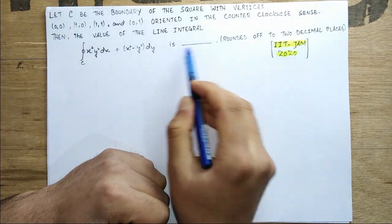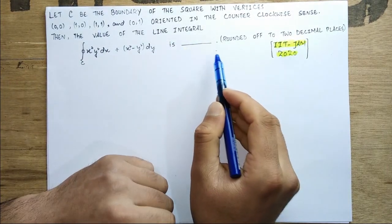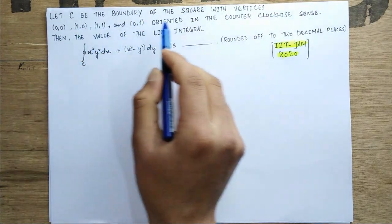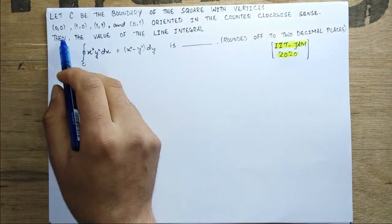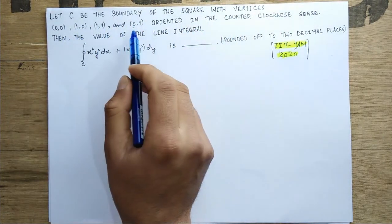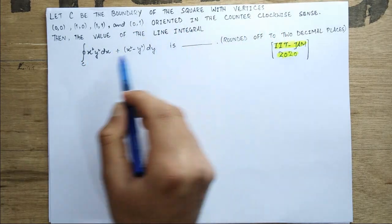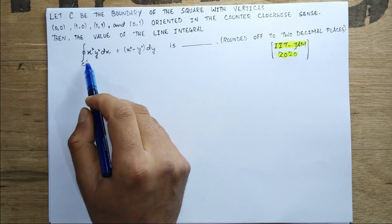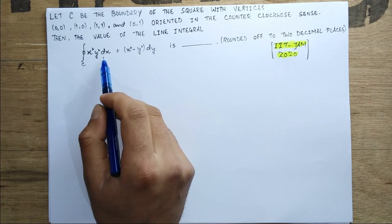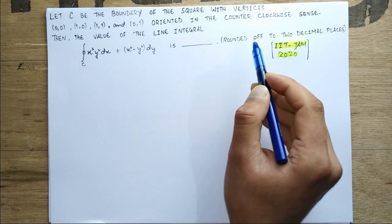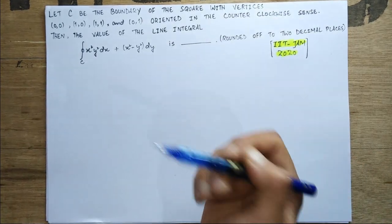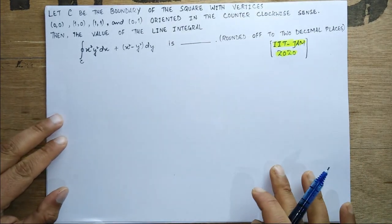Our problem question is based on Green's theorem, I should say, not Green's function. Let C be the boundary of a square with vertices (0,0), (1,0), (1,1), and (0,1) oriented in the counterclockwise sense. Then the value of the line integral over C of x² y² dx plus (x² - y²) dy is rounded up to 2 decimal places. So it is based on Green's theorem.